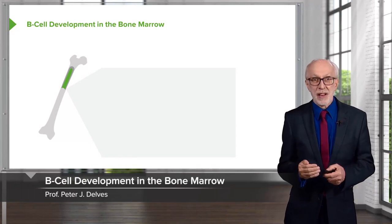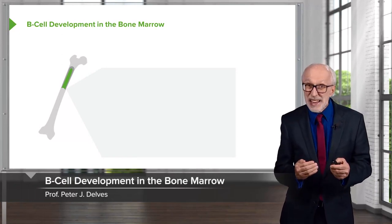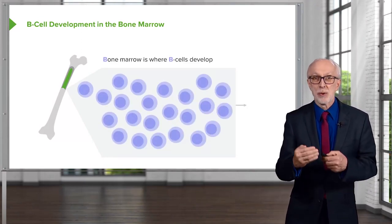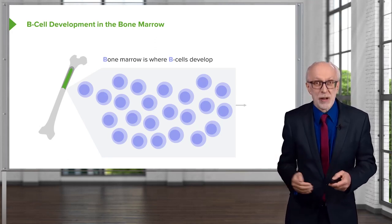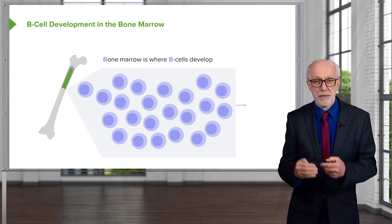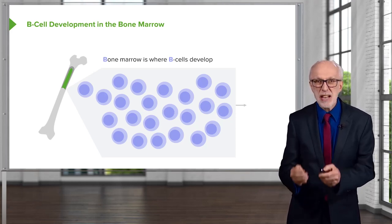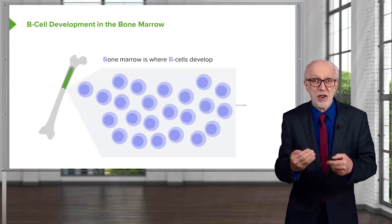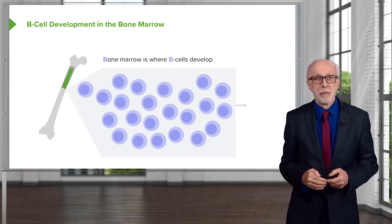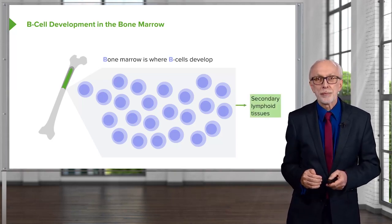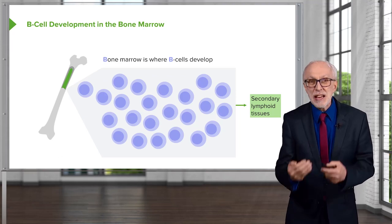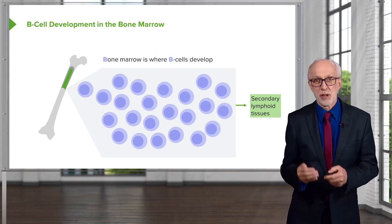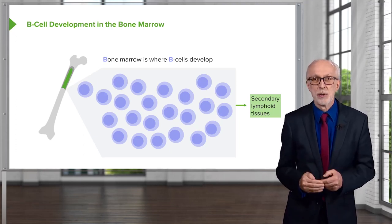B cells, as their name suggests, develop in the bone marrow. Virtually all the cells of the immune system start off from multipotent hematopoietic stem cells in the bone marrow. B cells can become fully mature within the bone marrow — they don't need to go anywhere else. Once they are mature, they can leave the bone marrow and travel to the secondary lymphoid tissues, the mucosa-associated lymphoid tissue, the lymph nodes, and the spleen.